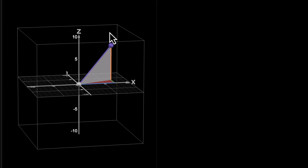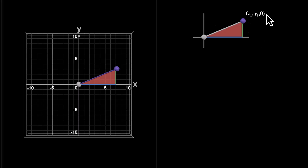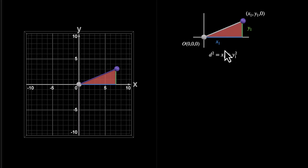Let's break it down. First, let's focus on the first triangle. What's the length of its hypotenuse? This is our x coordinate and this is our y coordinate — we're moving from origin to the point (x1, y1, 0), because we're looking at the XY plane where z is 0. This length is x1 and this is y1, so the hypotenuse d satisfies d² = x1² + y1².